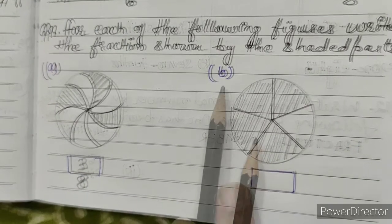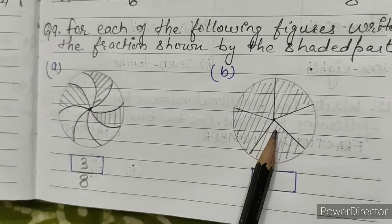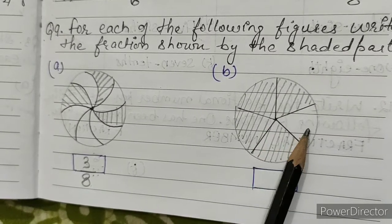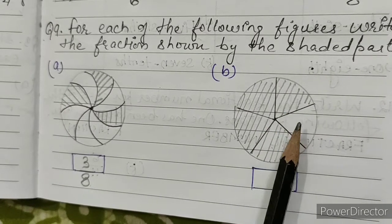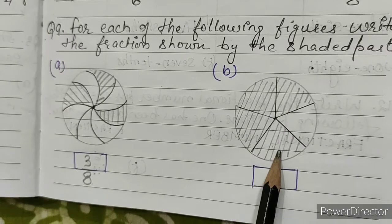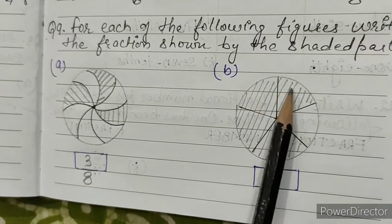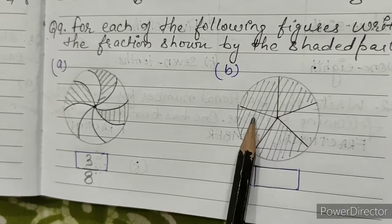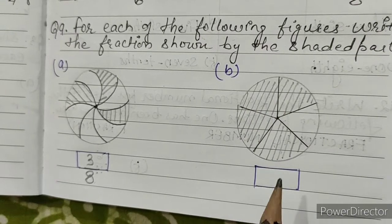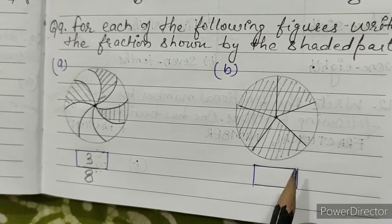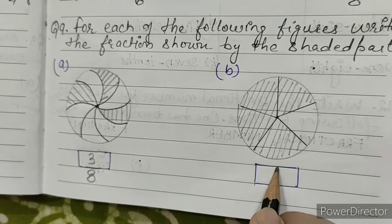B: this figure is divided into 5 equal parts — 1, 2, 3, 4, 5. Out of 5 parts, 4 parts are shaded. So our answer will be 4 by 5.